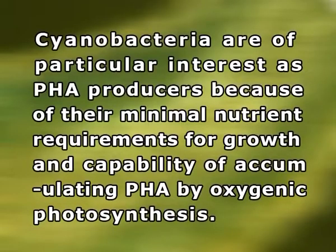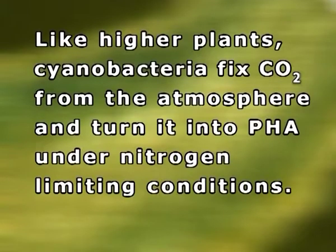The PHA granules can be stained by Nile Blue A and they appear as discrete electron-transparent granules in the cell cytoplasm. Cyanobacteria are of particular interest as PHA producers because of their minimal nutrient requirements for growth and capability of accumulating PHA by oxygenic photosynthesis. Like higher plants, cyanobacteria fix carbon dioxide from the atmosphere and turn it into PHA under nitrogen-limiting conditions. Most known cyanobacteria capable of synthesizing PHA usually accumulate PHAs amounting to less than 6% of their cell dry weight.